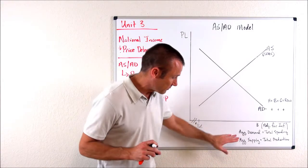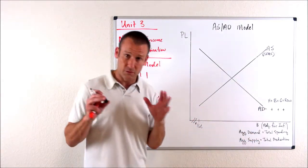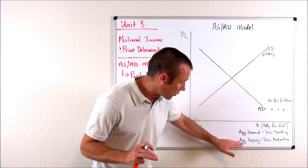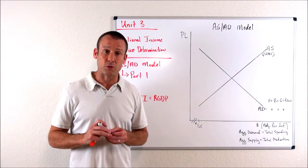So we've got a dollar measurement of the total demand for domestically produced goods and services, and a dollar measurement of the total supply of domestically produced goods and services.